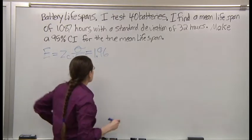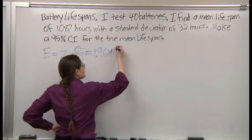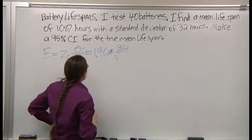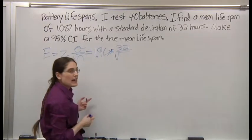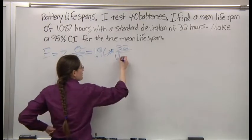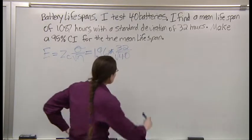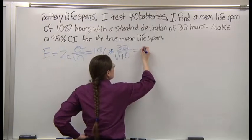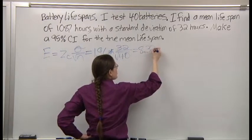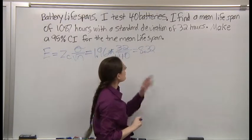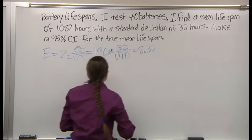32. What's n? How many batteries? 40. Work that all out. We get 8.32. I'm going to round to 8 because our original numbers were given in whole numbers.